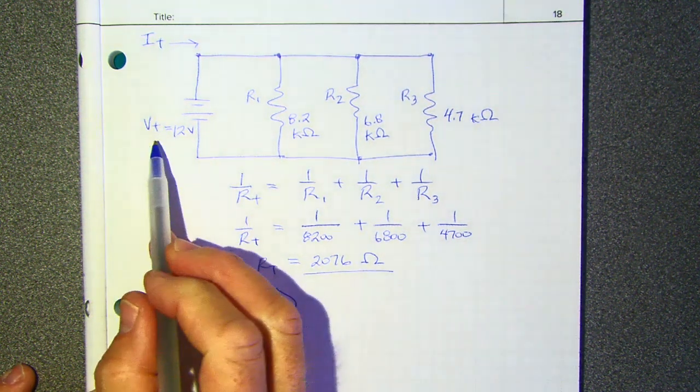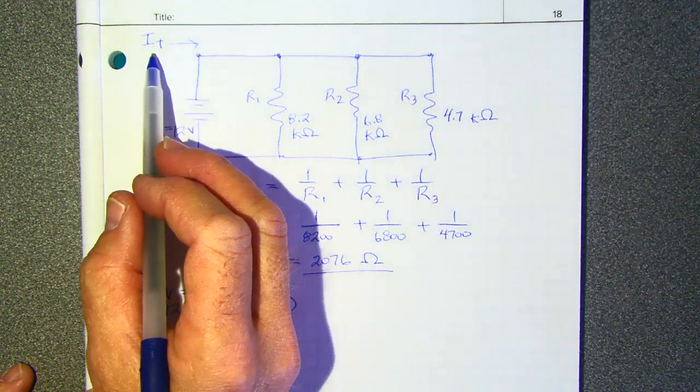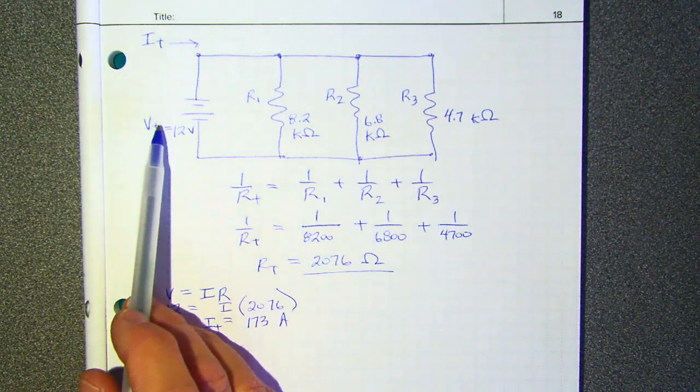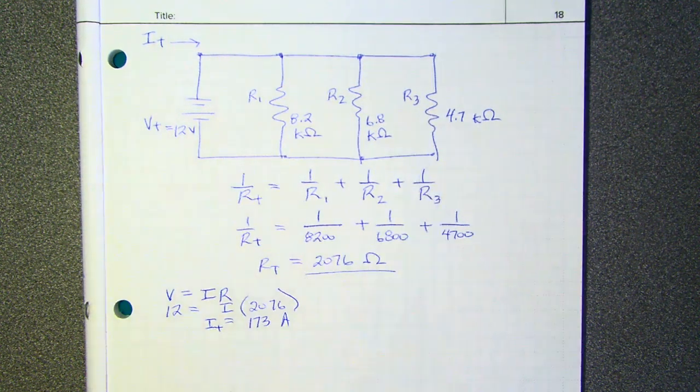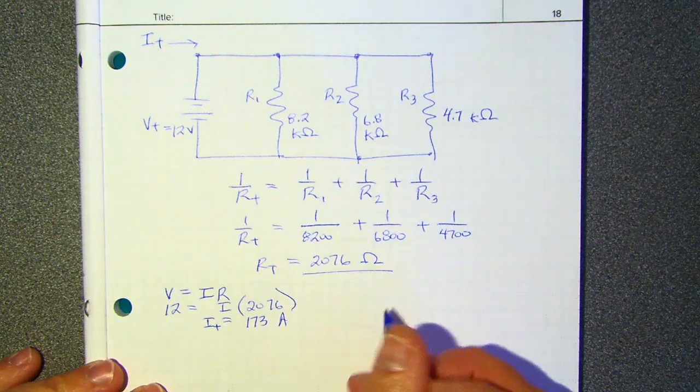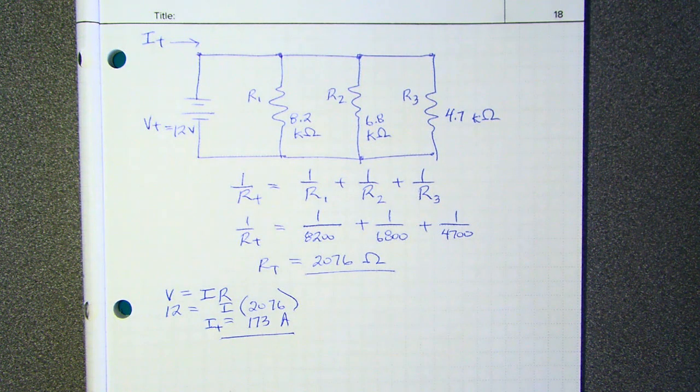We were given the total voltage, we calculated the total resistance, and now we have also calculated the total current. And remember, there are like 12 things we have to find. And we know like three of them. Actually, we know six because we were given those resistances. So we know six out of the 12 things. We've got the current right there. 173. Well, now things get a little strange.